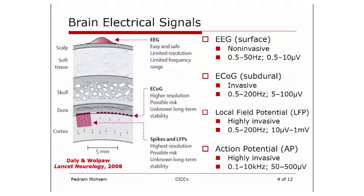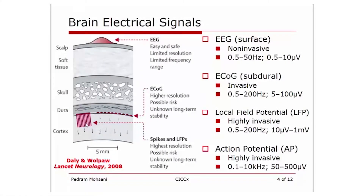Depending on where your recording probe is located, you could be facing a wide range of different signal modalities recordable from the brain. At one end of the range you have surface EEG signals that can be directly recorded from the scalp — a simple and fully non-invasive mode of recording — but in return you won't have a very high degree of resolution in time and space. At the other end you have intracortical action potentials that can be recorded from individual neurons if you penetrate the brain surface.